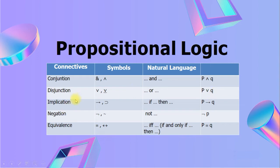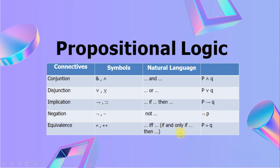The third connective is implication, symbolized by an arrow (→), meaning 'if... then...' — read as 'if p then q.' The fourth connective is negation, symbolized by ¬, with the natural language expression 'not' — read as 'not p.' The fifth connective is equivalence, symbolized by ↔, with the natural language expression 'if and only if' — read as 'p if and only if q.'